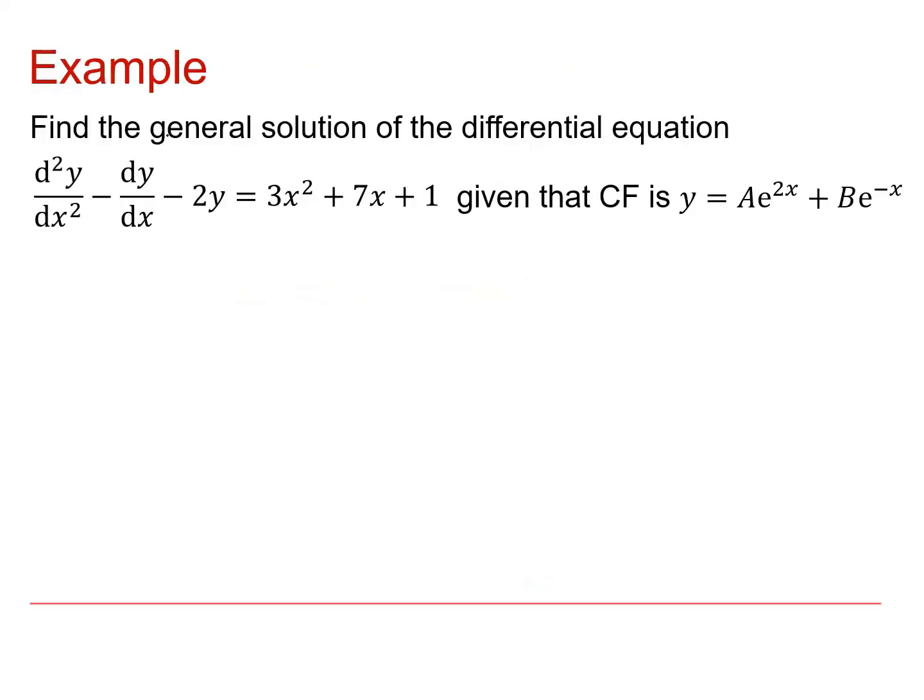Let's have a look at this example. This shape of differential equation, the homogeneous type, we have seen before and have solved for the complementary function. And that complementary function is y equals Ae^(2x) plus Be^(-x). In this example, I've got a right-hand side of 3x² plus 7x plus 1.